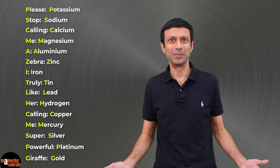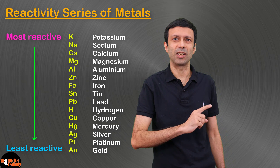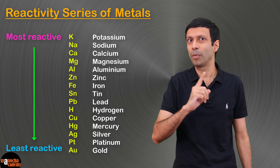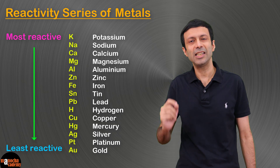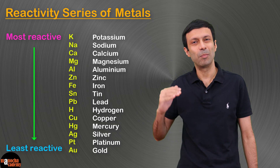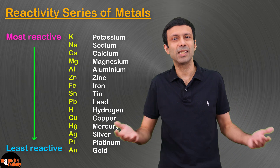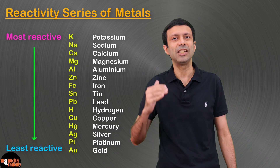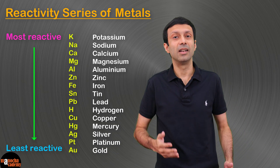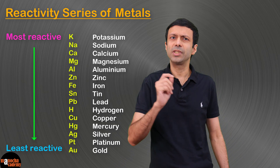As you can see, Potassium is the most reactive metal since it's at the top of the list, and Gold is the least reactive since it's at the bottom. Now, in some books you might see some variations — like Platinum being listed as the least reactive metal instead of Gold.